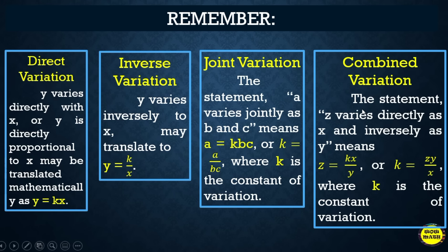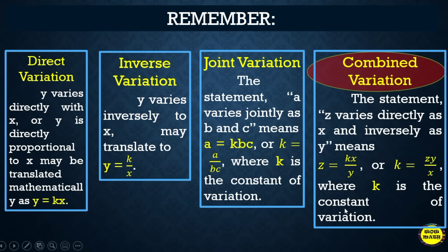Combined variation is another physical relationship among variables. It is the kind of variation that involves both direct and inverse variation, and also joint variation. These three types are combined in this last type of variation, so we need to recall how to translate direct, inverse, and joint variation.